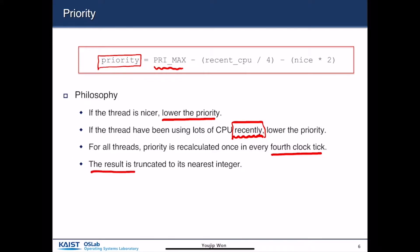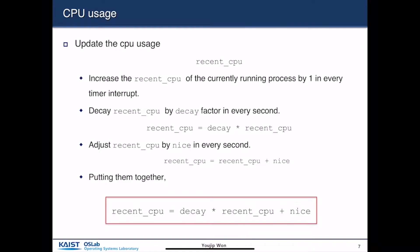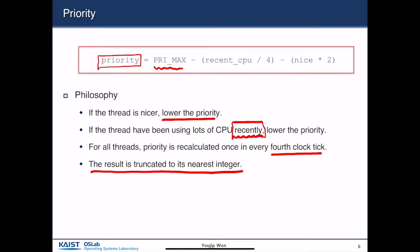This statement sounds pretty obvious, but it is not. The reason is that priority and priority_max are integers, but recent_cpu divided by 4 and nice are not integers — they are floating-point numbers. So we have to have some rules to map the floating-point number to the integer value, and the result is truncated to its nearest integer.